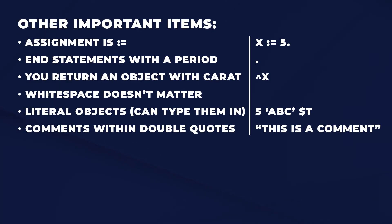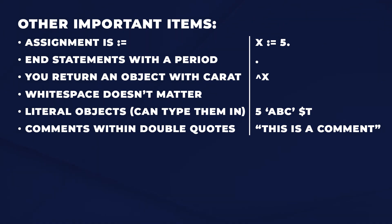A few other important things to know. Assignment is done with colon-equals, so 'x := 5' — we can tell it's lowercase, so that's a local variable. Statements end with a period. If you want to return an object from a method, use the caret — so this says 'return x'. Whitespace doesn't matter. Literal objects are things you can type in: 5, the string 'ABC', the character uppercase T. And comments in your methods are done with double quotes.